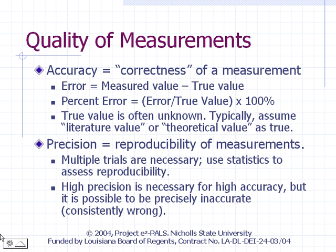It is important to realize that the true value of whatever we are trying to measure may not always be known. Typically we compare our results with those available in the literature — published works by reputable scientists corroborated by other reputable work. It is possible that no one has attempted to measure the quantity, but there might be a reliable accepted theory that predicts what it should be. We can use the theoretical value as our true value — a theory whose predictions have been found consistent with a wide range of other experimental measurements.